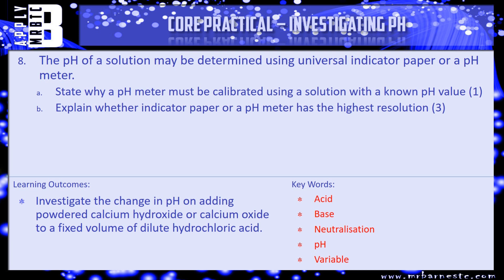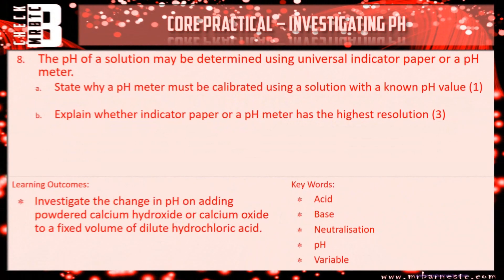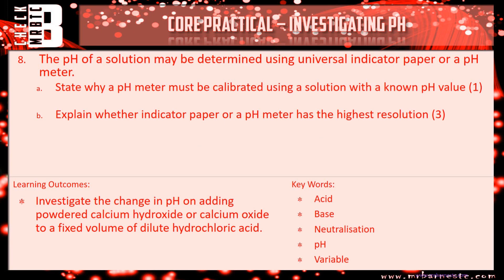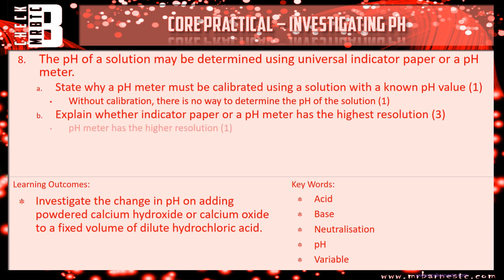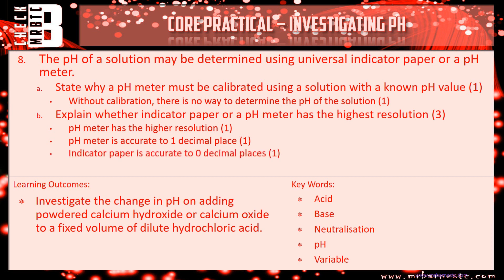The final question: the pH of a solution may be determined using universal indicator paper or a pH meter. Part A: state why a pH meter must be calibrated using a solution with a known pH value. Part B: explain whether indicator paper or a pH meter has the highest resolution. For Part A: if it's not calibrated, without calibration there's no way to determine the pH of the solution you are measuring. For Part B: the pH meter has the higher resolution, because it is accurate to one decimal place, whereas indicator paper is accurate to zero decimal places. Therefore the pH meter is ten times more accurate than the indicator paper, meaning the pH meter has a higher resolution.